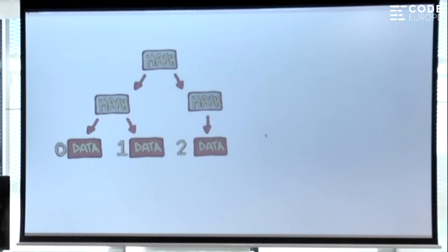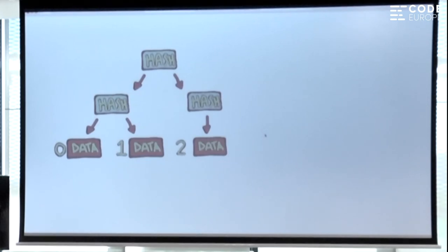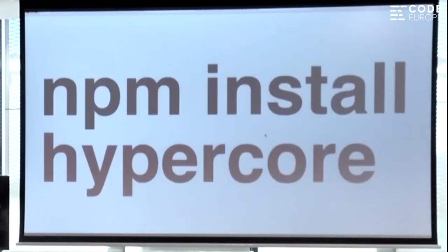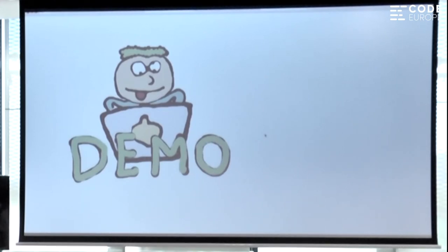If you ever used something like BitTorrent, this is the foundation of all those protocols — a very important data structure. You just keep adding data, keep producing these binary trees, and you just have to trust the top hash to trust all the content. I took all that and used it to make a cryptographically secure append-only log — that's what we're going to talk about today. It's called HyperCore, and you can install it from NPM. I'm going to try to demo that now.